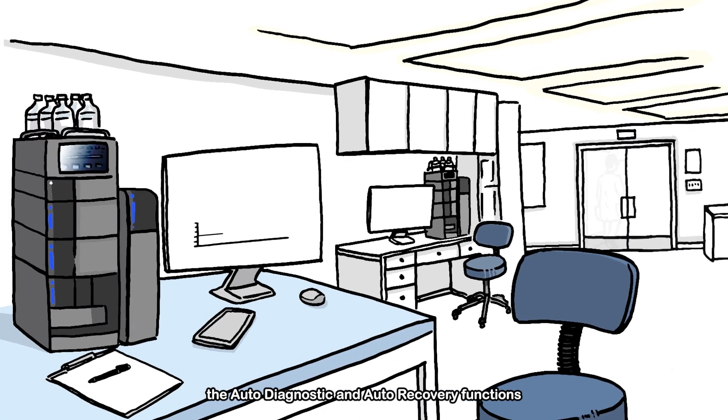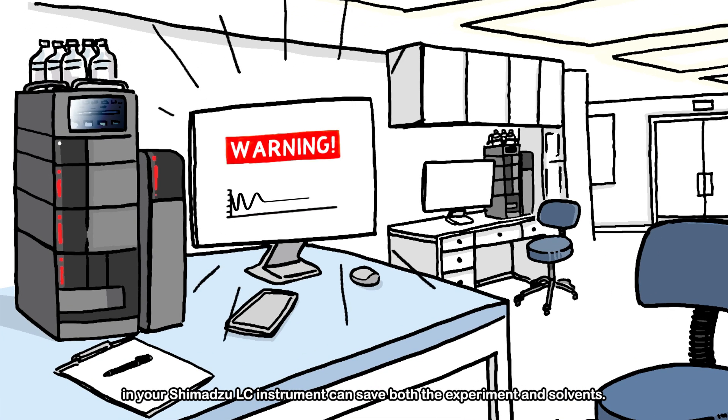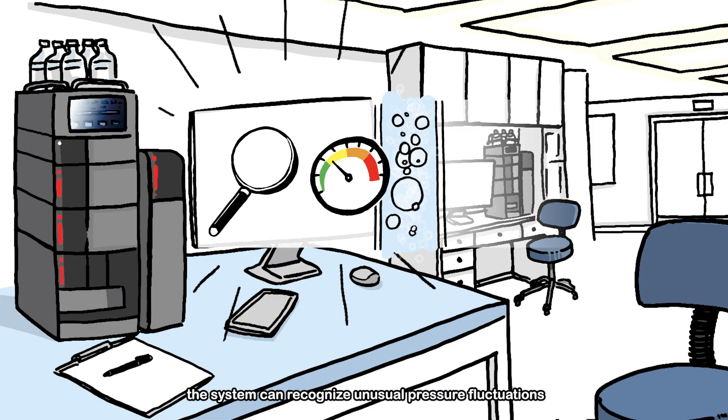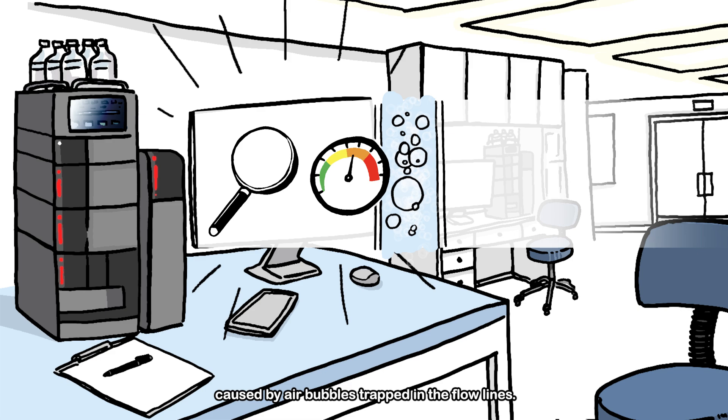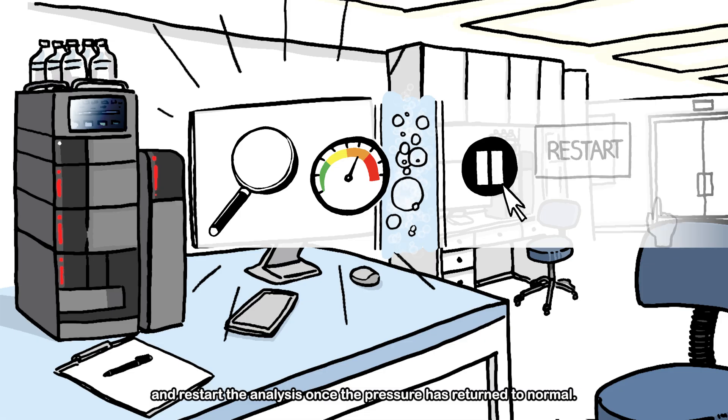the auto-diagnostic and auto-recovery functions in your Shimadzu LC instrument can save both the experiment and solvents. With rapid and reliable anomaly detection, the system can recognize unusual pressure fluctuations caused by air bubbles trapped in the flow lines. It will then automatically pause the run, purge the flow path, and restart the analysis once the pressure has returned to normal.